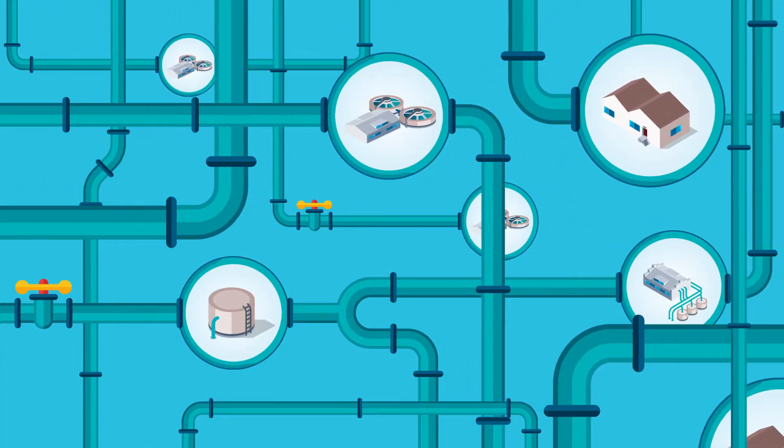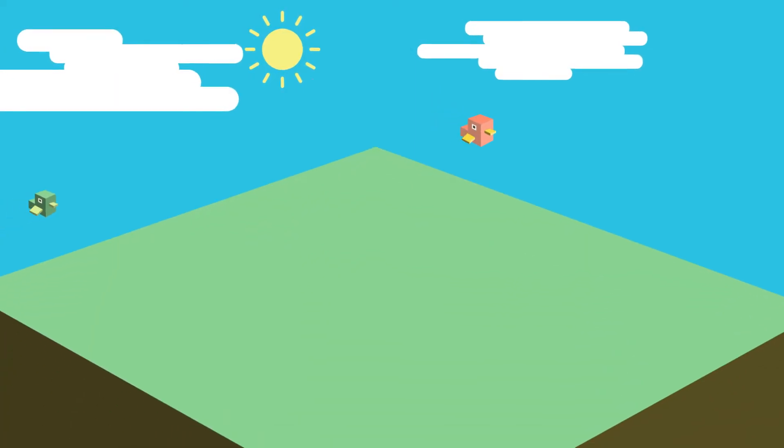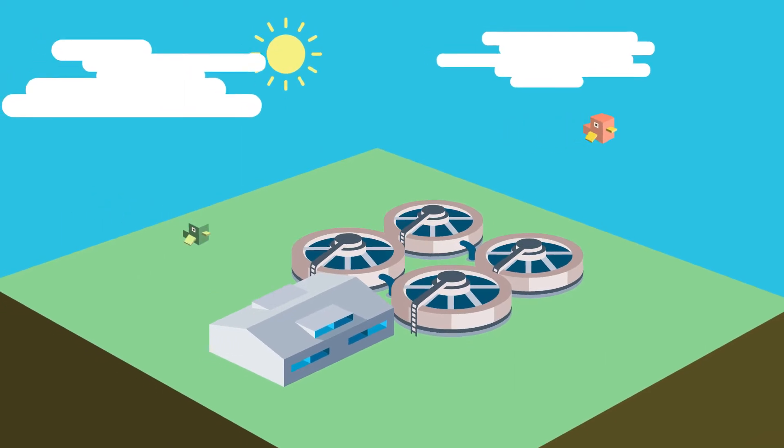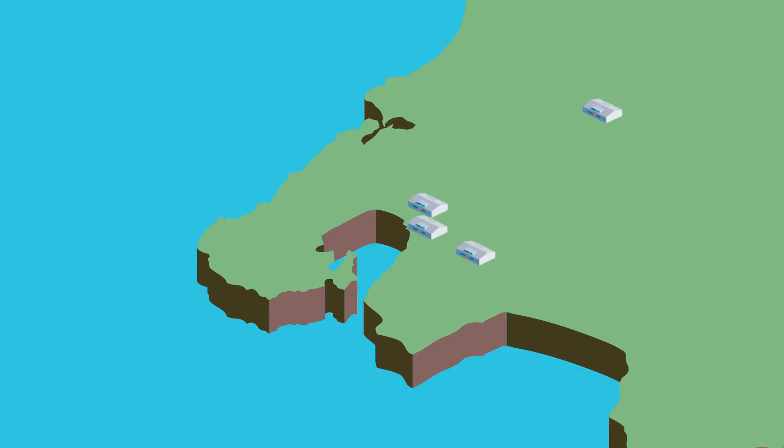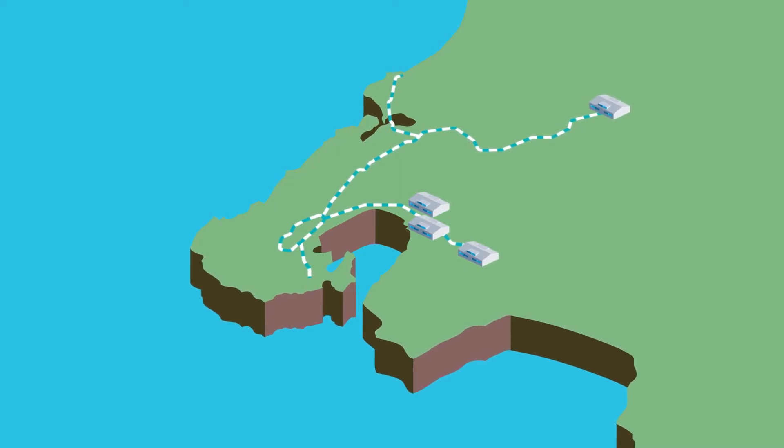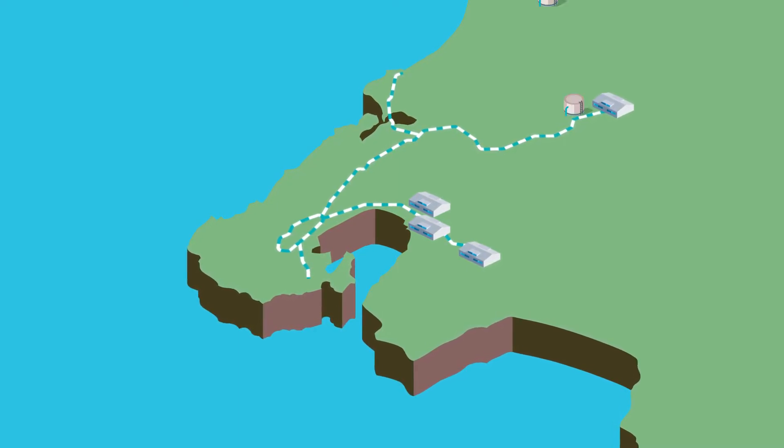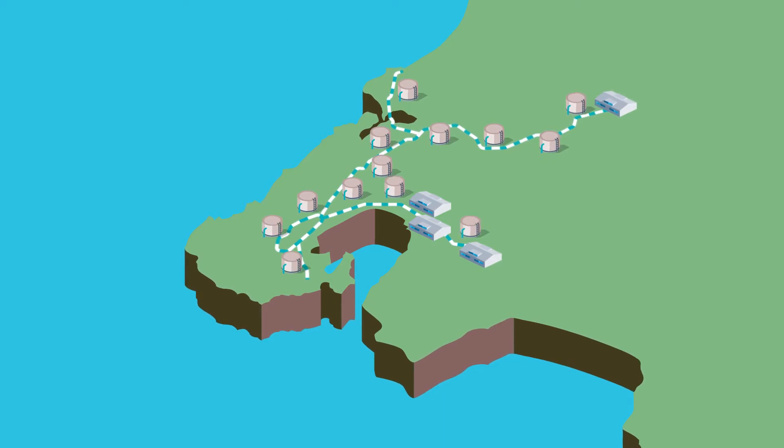This is our drinking water network. The network begins at the treatment plant, where water is transported along bulk mains, like highways, which carry most of your water. The bulk mains then lead to around 140 reservoirs.